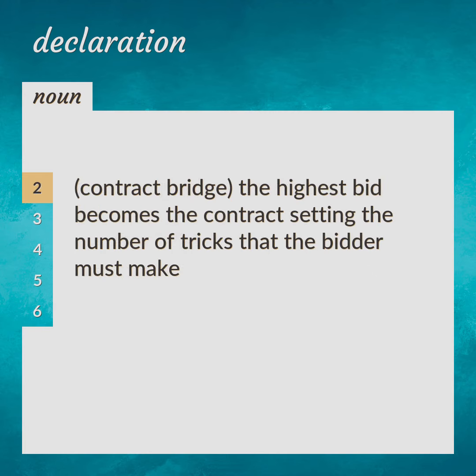In Contract Bridge: the highest bid becomes the contract, setting the number of tricks that the bidder must make. Contract.